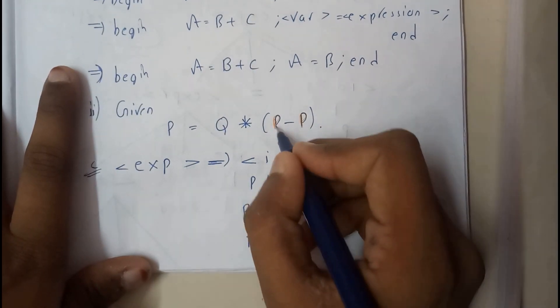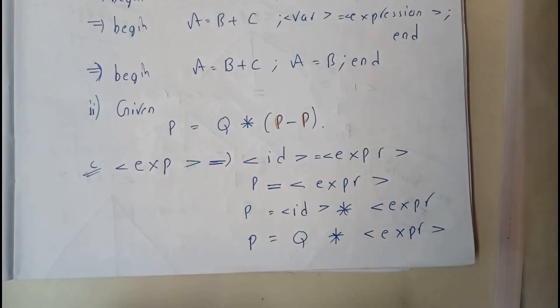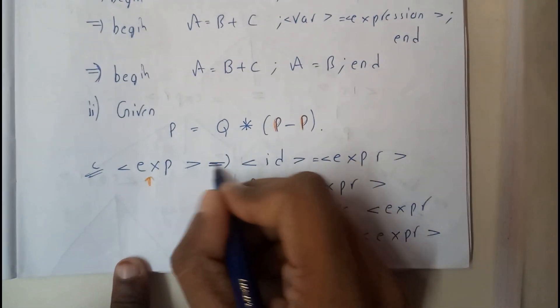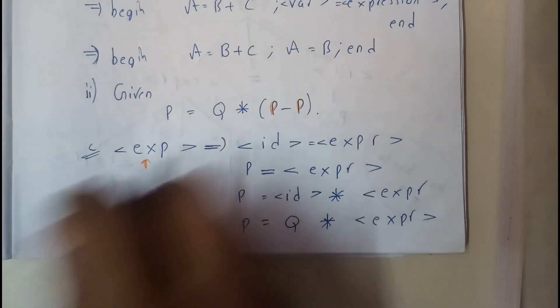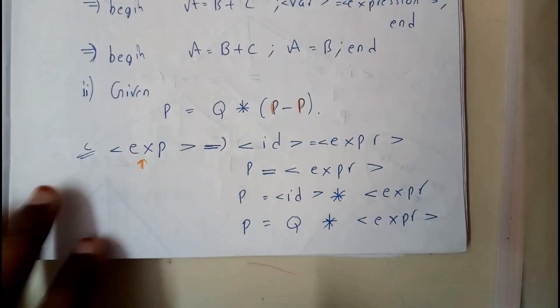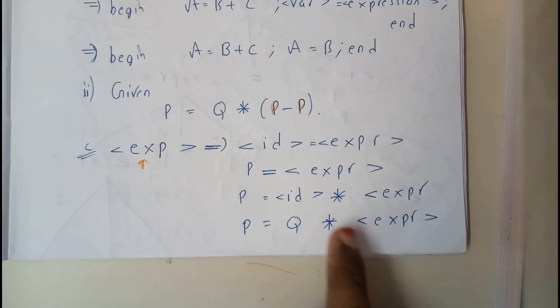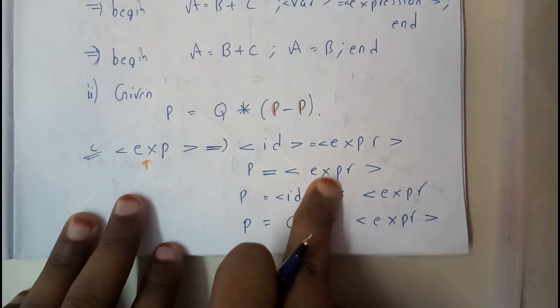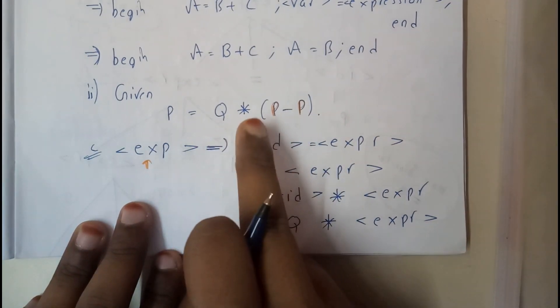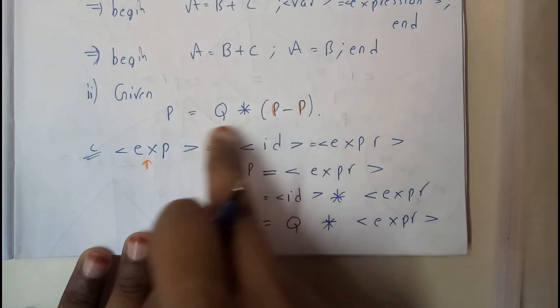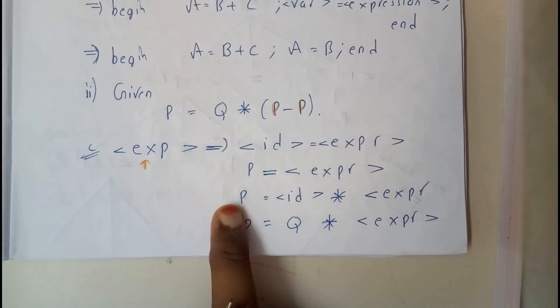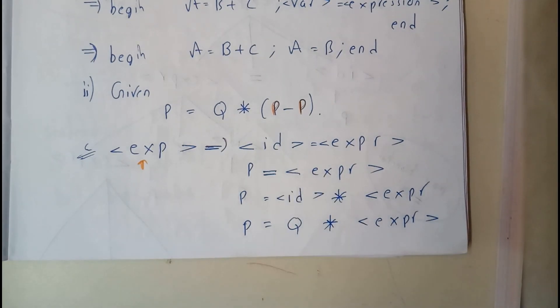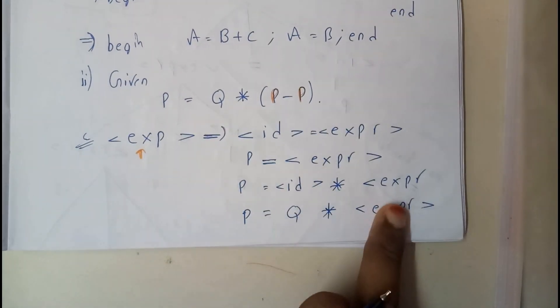Basically I will assume this whole expression as exp. We have an identifier on the left side and an expression on the right side. The identifier is P. The expression has an identifier times one more expression. If it's individual, that's an identifier; if it has signs in between, we call it an expression. We identified the identifier and placed Q. Now we're left with the expression.